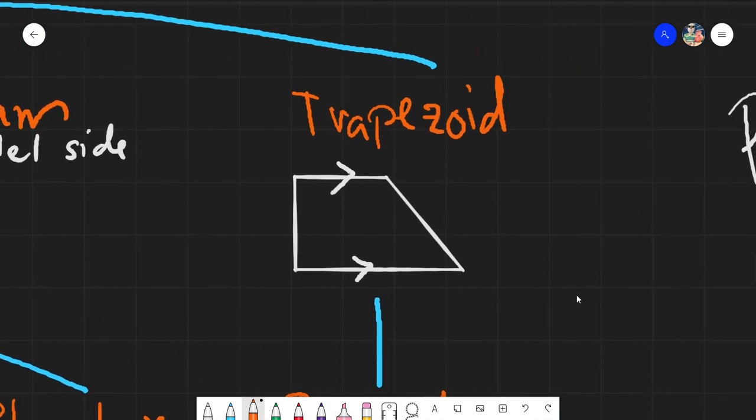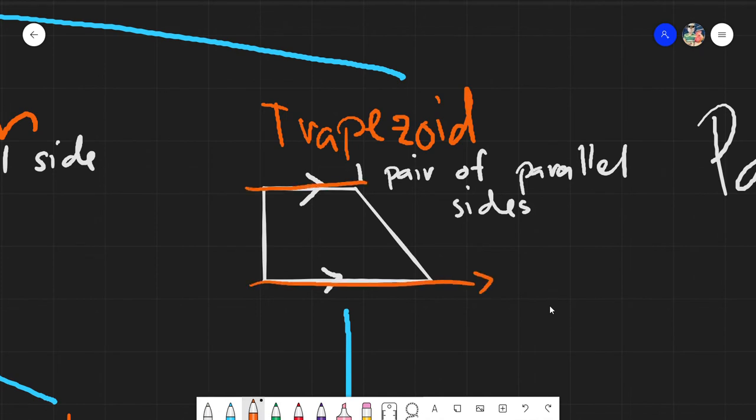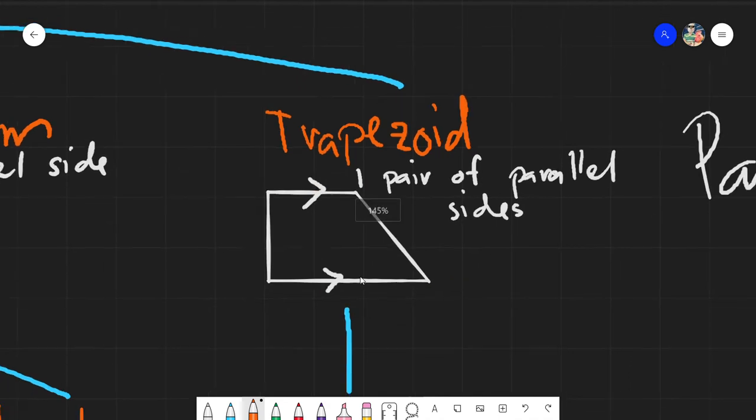And next, we proceed to the trapezoid. A trapezoid would just simply be a figure with one pair of parallel sides. Ito yun, ito yung parallel sides mo. Even if you extend that, they will never meet. And that would be for the trapezoid.